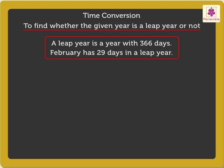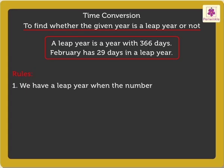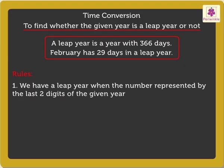Now, in order to find whether the year is a leap year or not, we just need to follow two simple rules. Rule 1: We have a leap year when the number represented by the last two digits of the given year is divisible by 4.